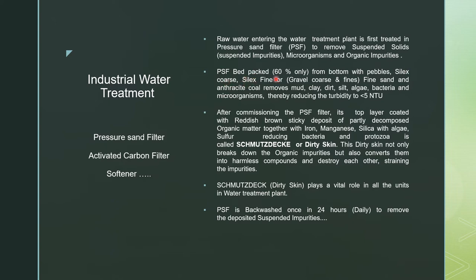The pressure sand filter bed is packed with 60% material. The top portion is called white space. From the bottom, the bed is packed with pebbles, silex coat, silex fines or gravel in coarse and fine sizes, above which fine sand is placed, and the topmost layer is filled with anthracite coat.